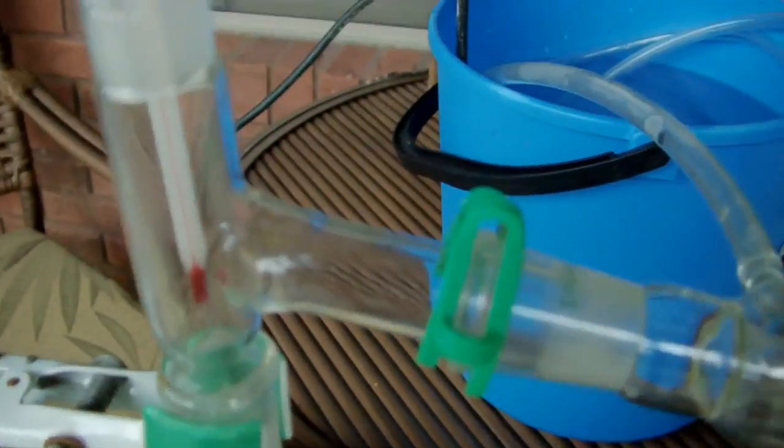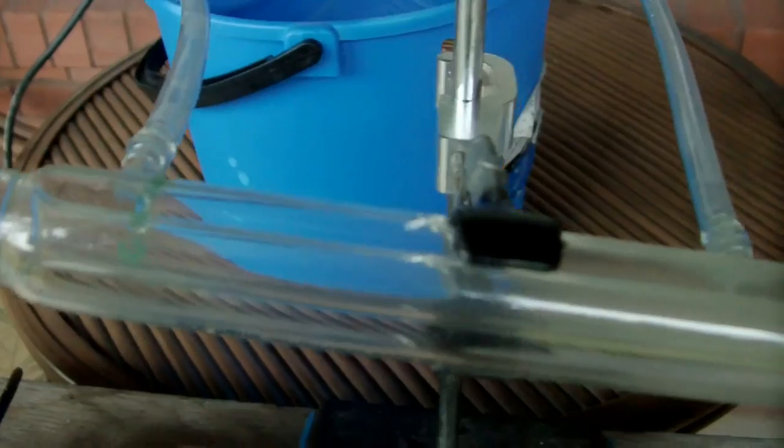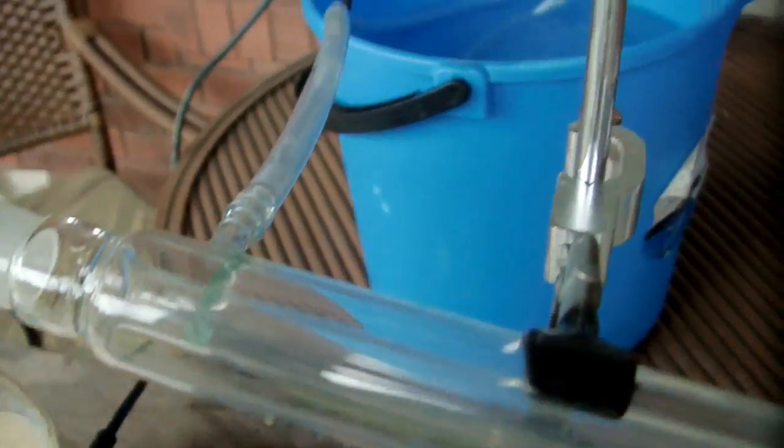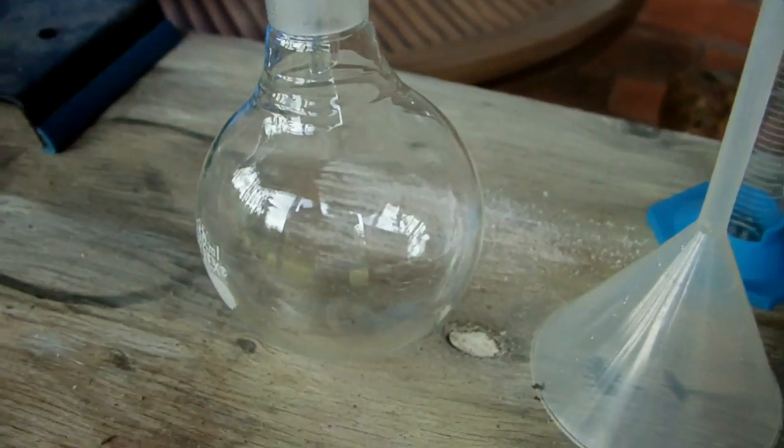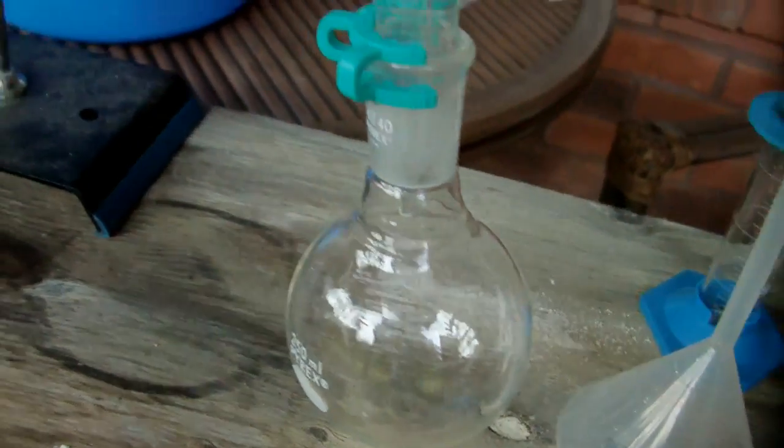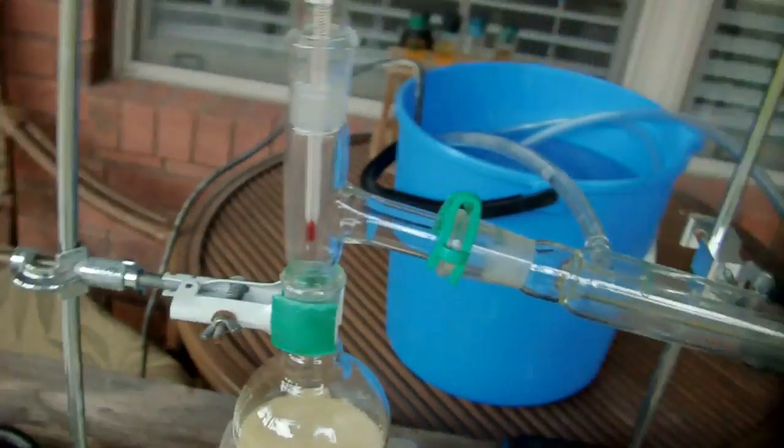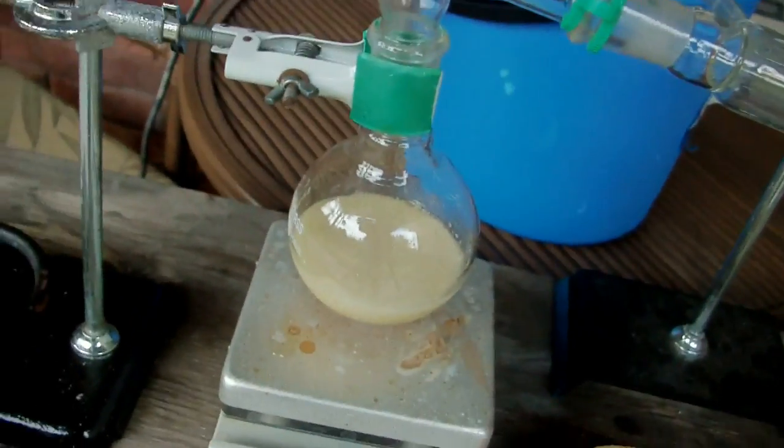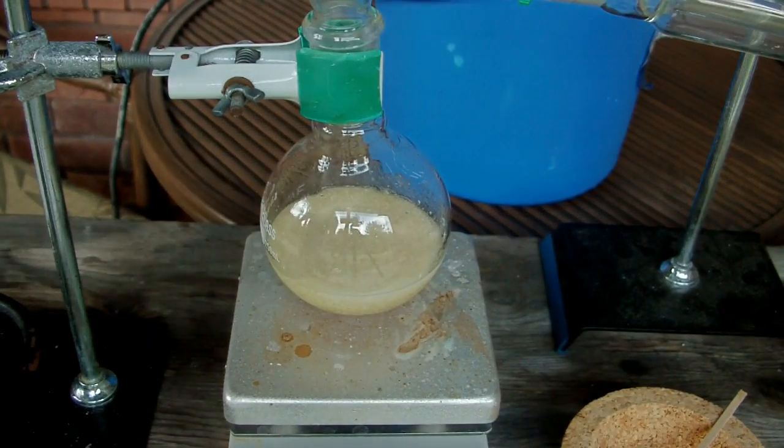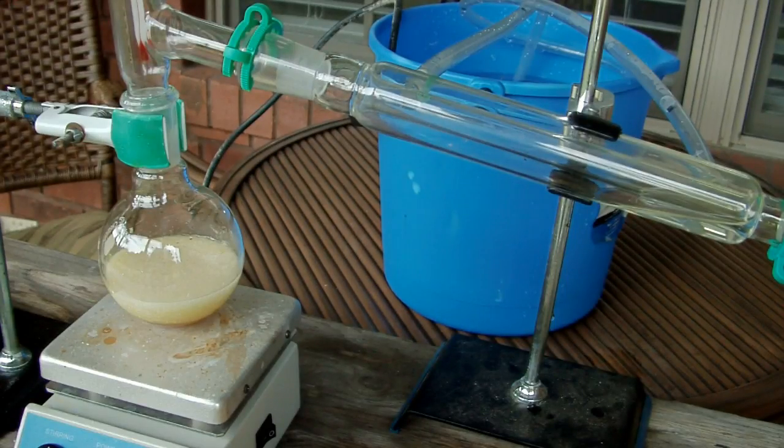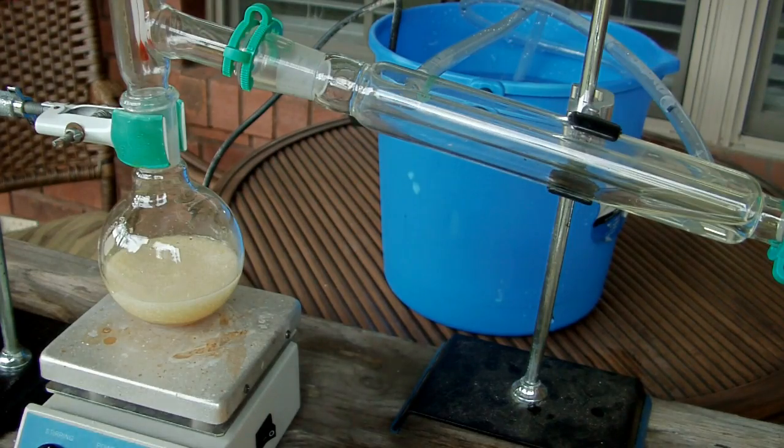That's where some of the vapors will condense, and then they'll go into the condenser here, which is where the rest of them will condense. That's water cooled by a bucket back there. Then that goes into an adapter to the collection flask, where I'll collect my nitric acid. So I need to heat this up to 83 degrees Celsius for the nitric acid to start coming over.